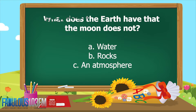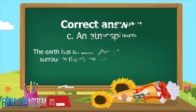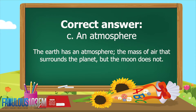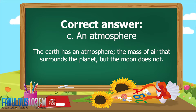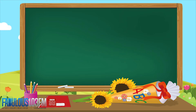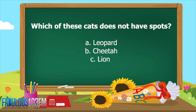If you answered c, an atmosphere, then you're absolutely correct! The earth has an atmosphere — that's the mass of air that surrounds the planet — but the moon does not. The second question yesterday: